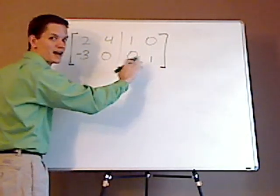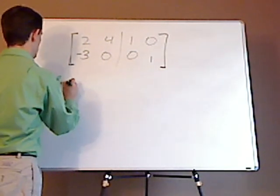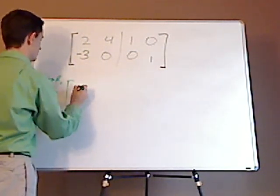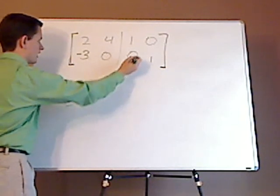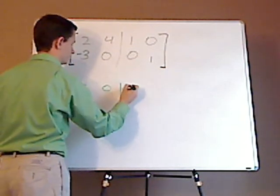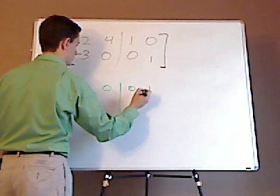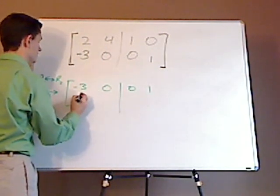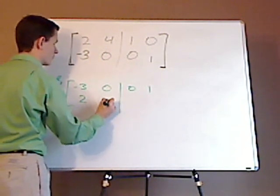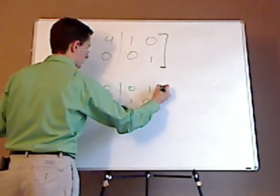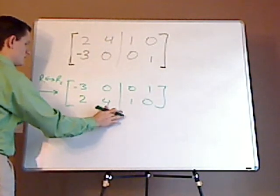So if I'm switching this over here, I have to also switch this, zero, one. And this would be two, four, one, zero.